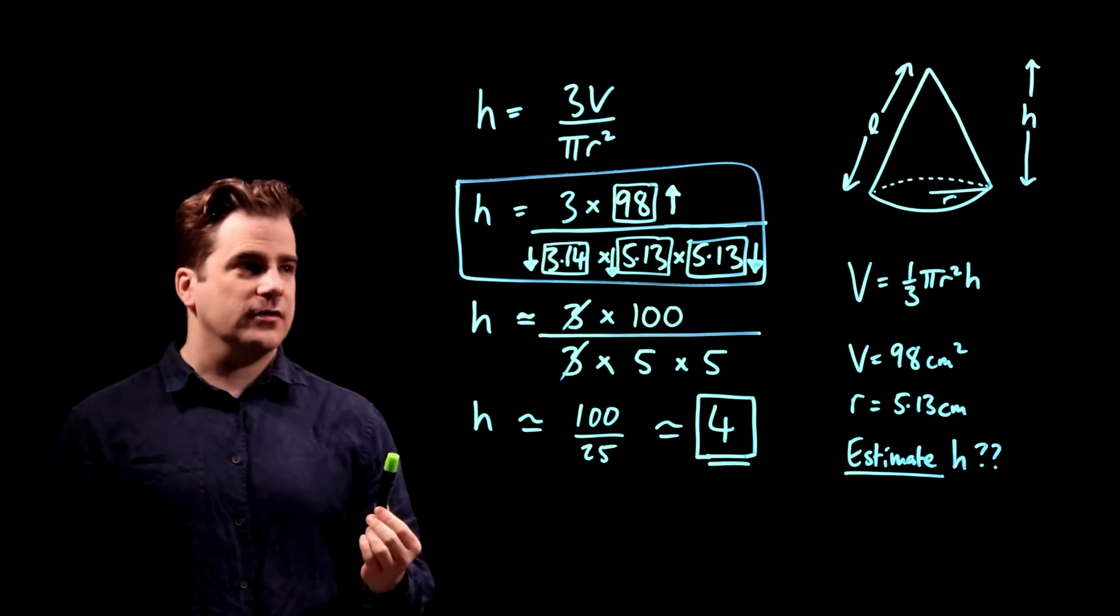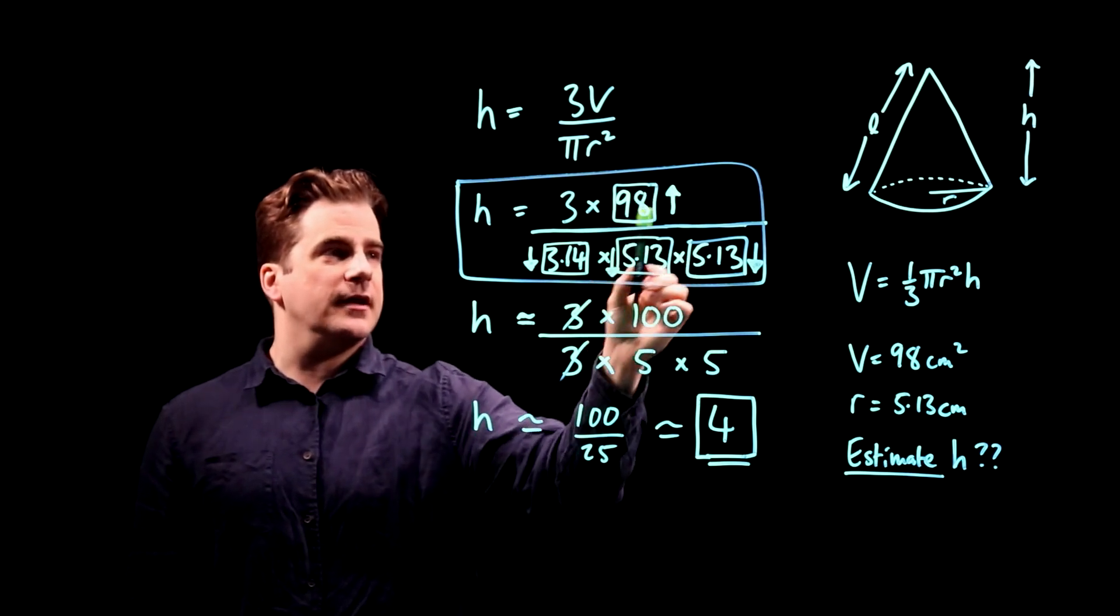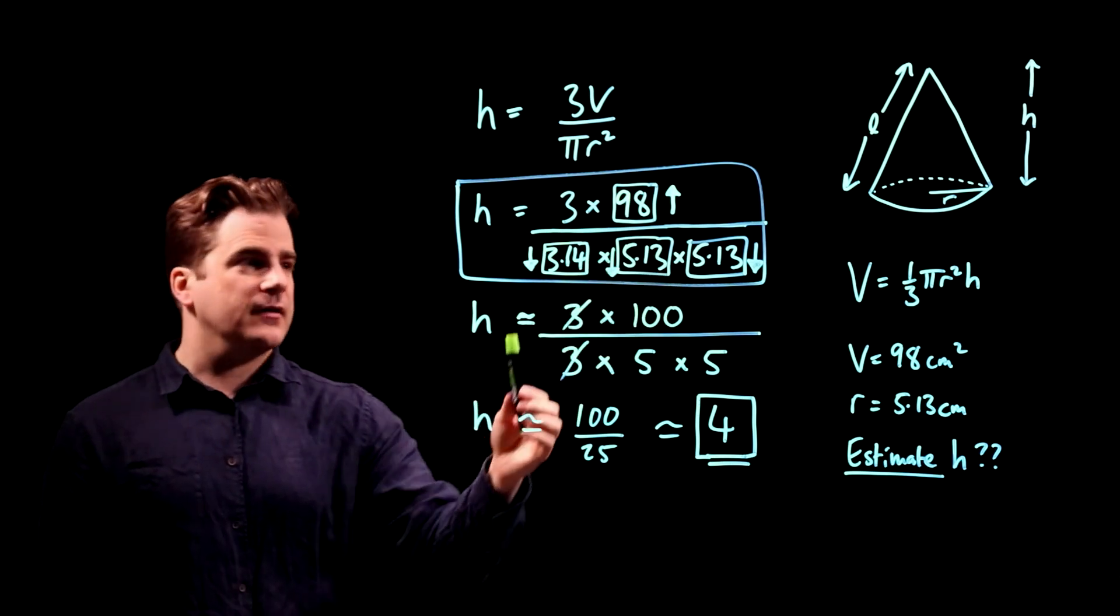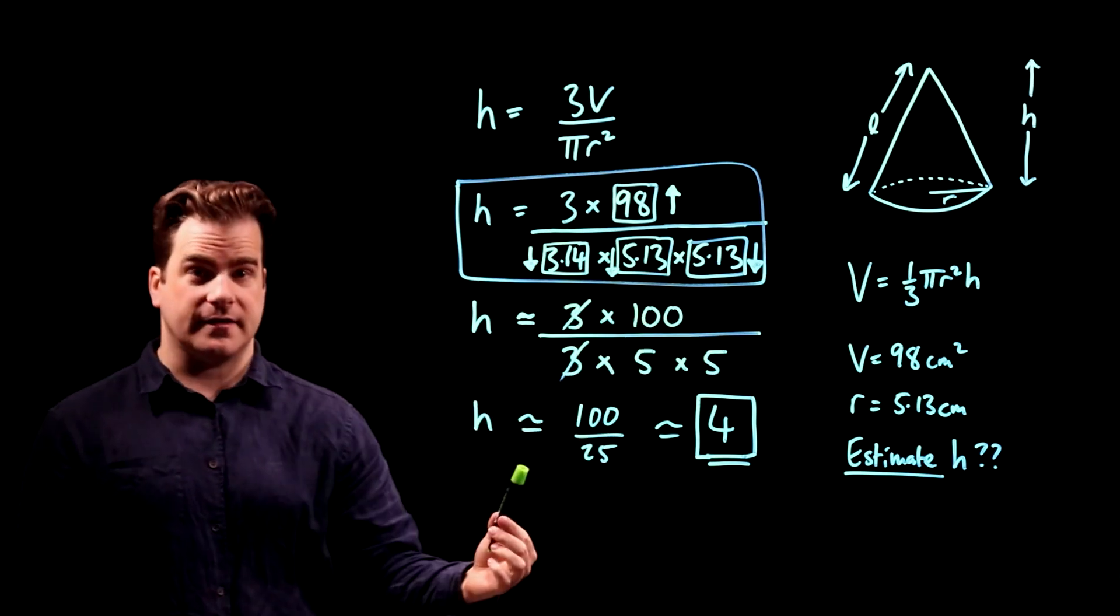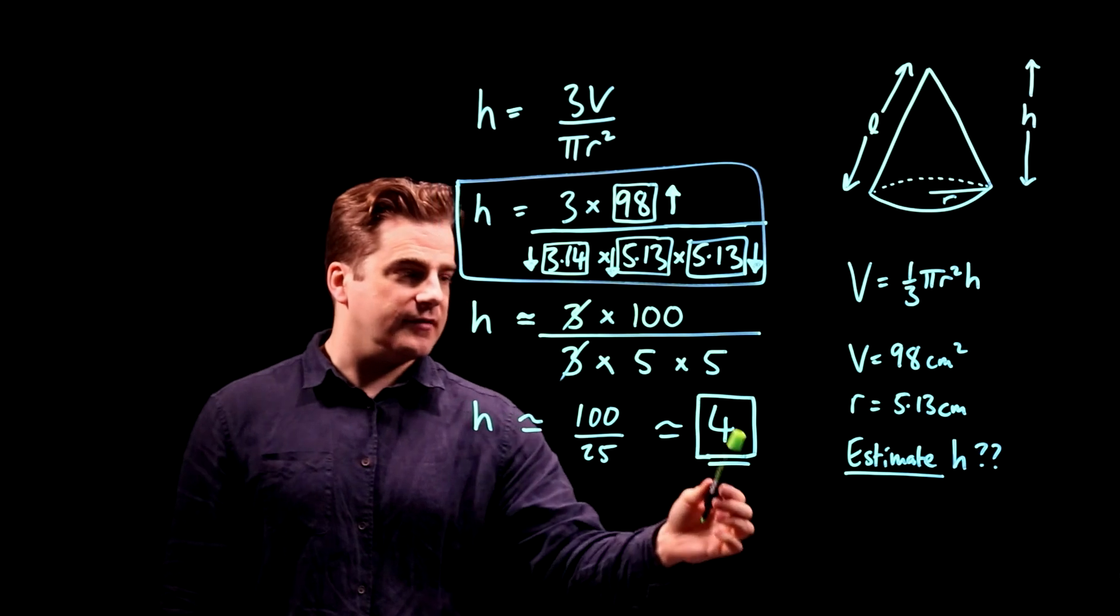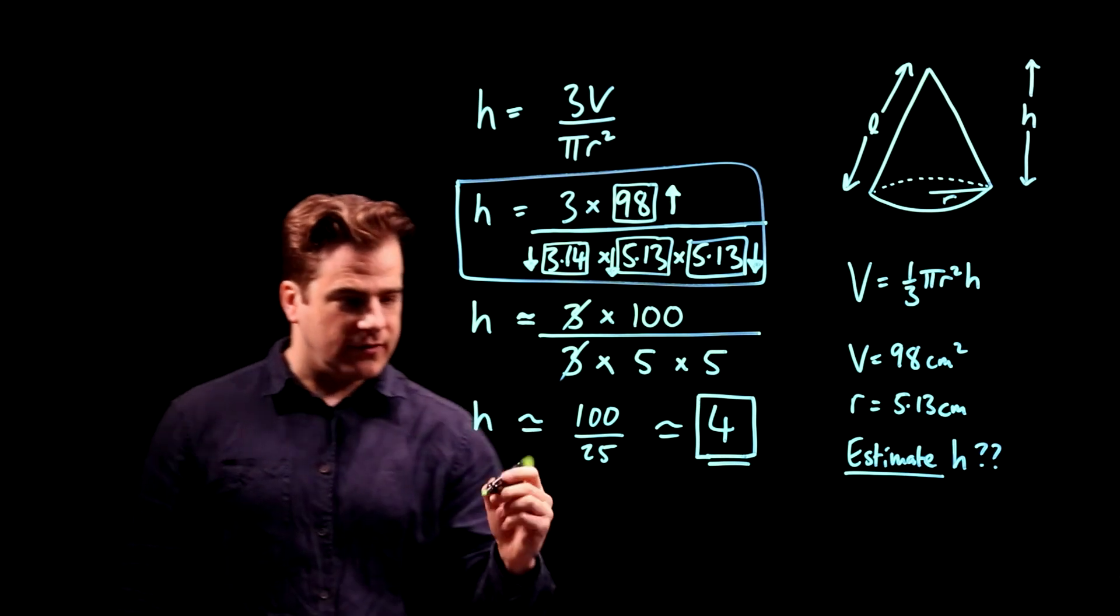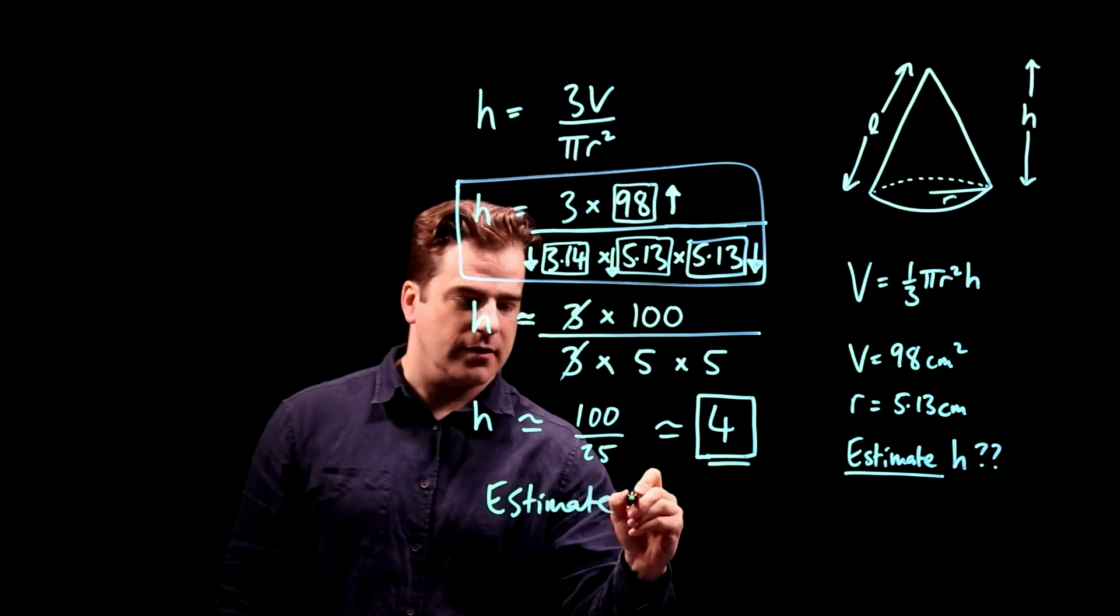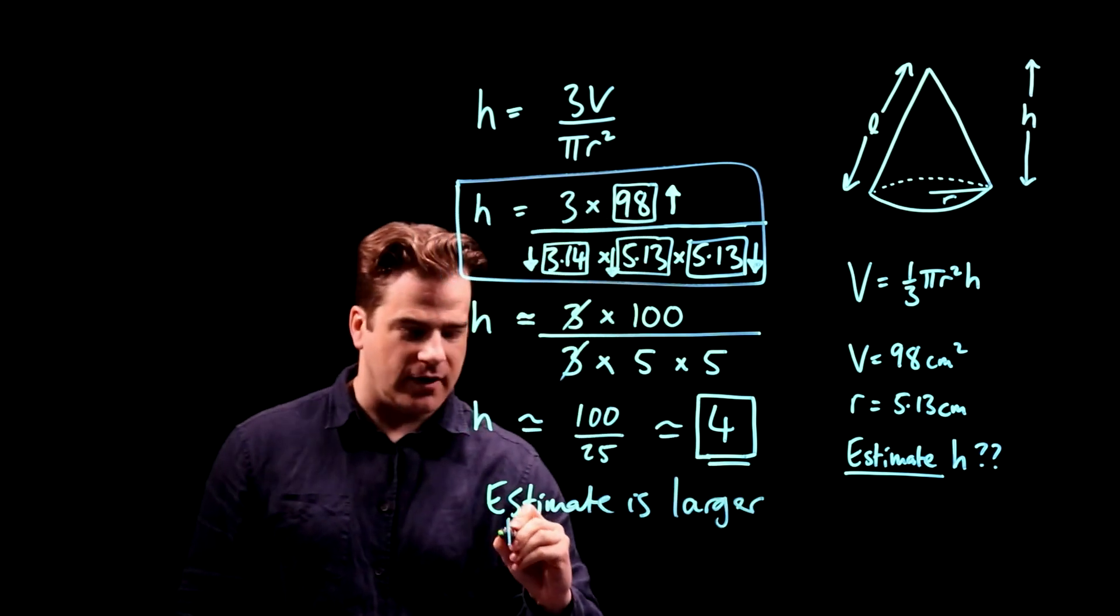So therefore, because we increased a number in the numerator on top, that made the estimate bigger. And by decreasing all the numbers in the denominator, that also made the estimate bigger. So therefore, the estimate is bigger than the true value. So the estimate is larger than the true value.